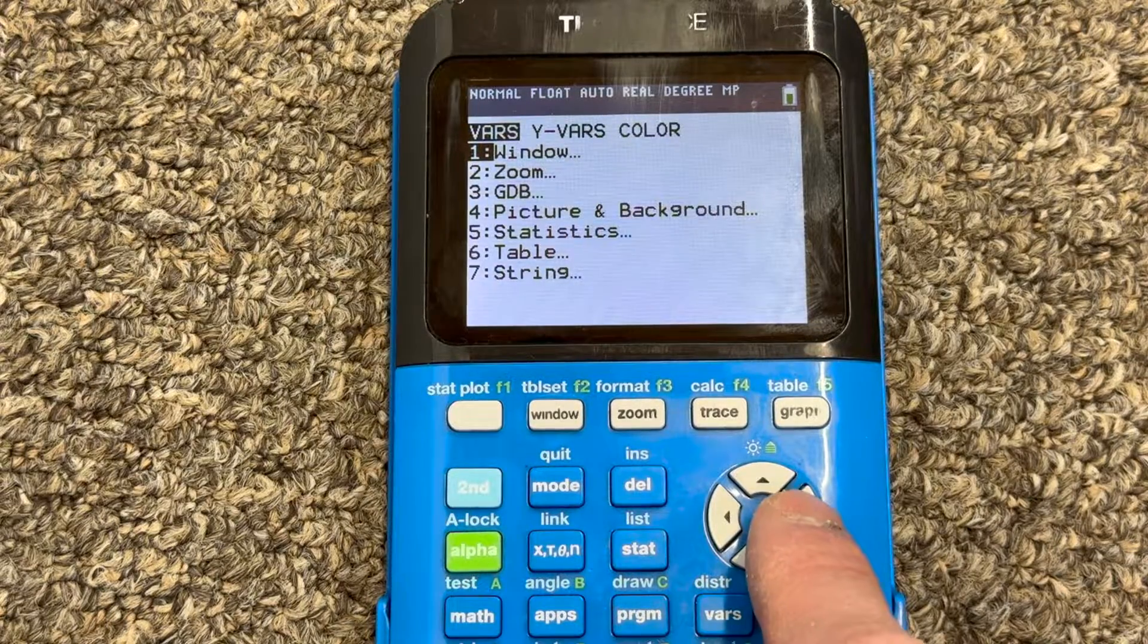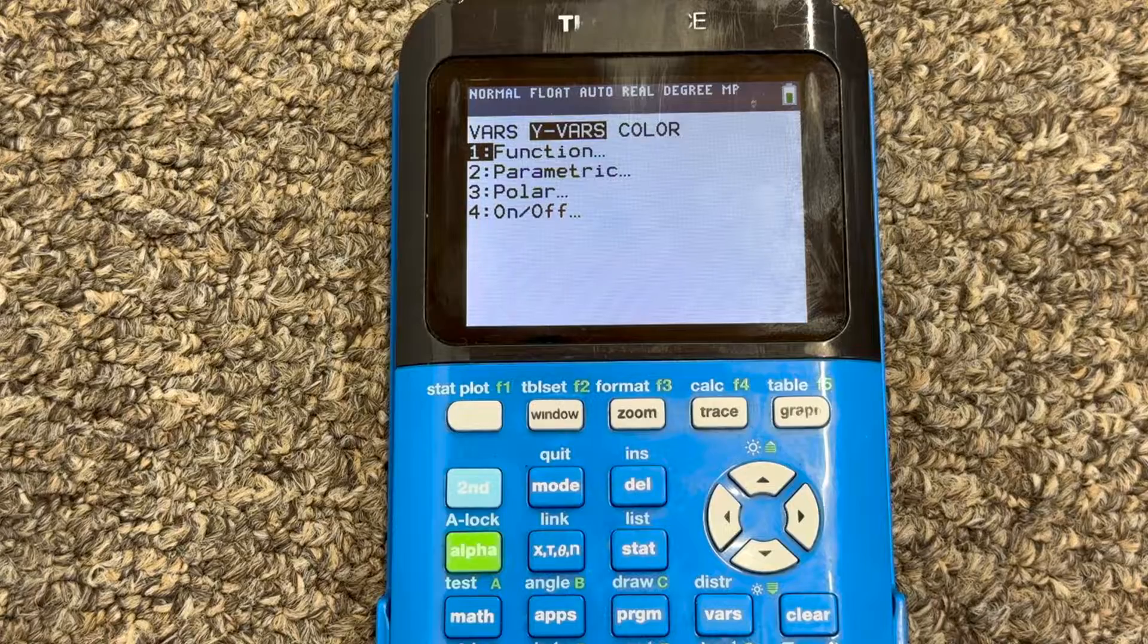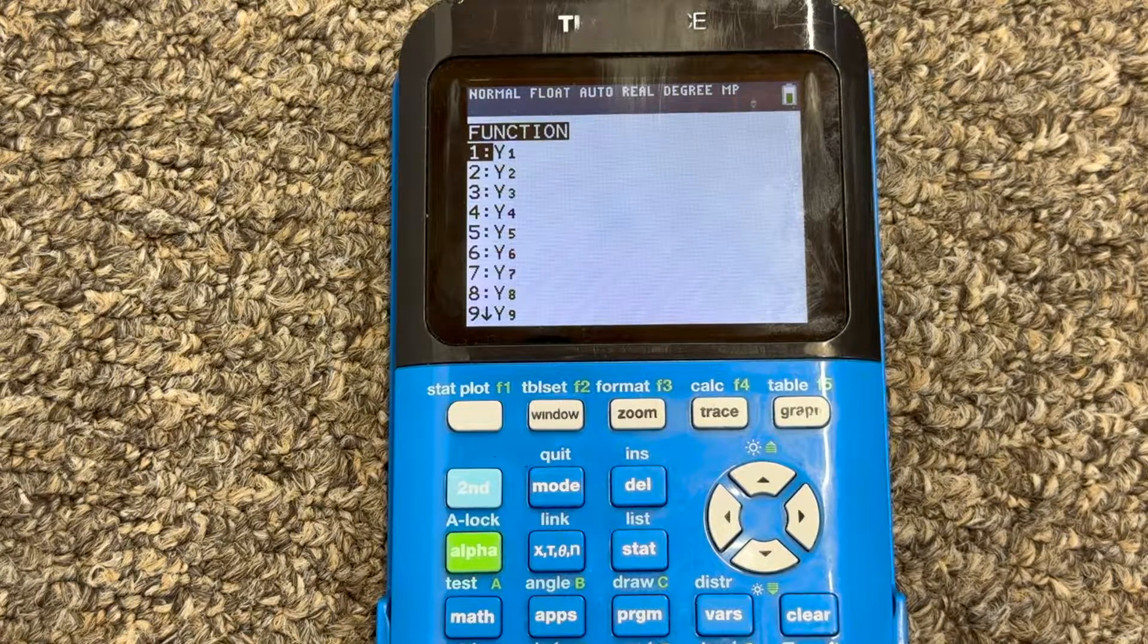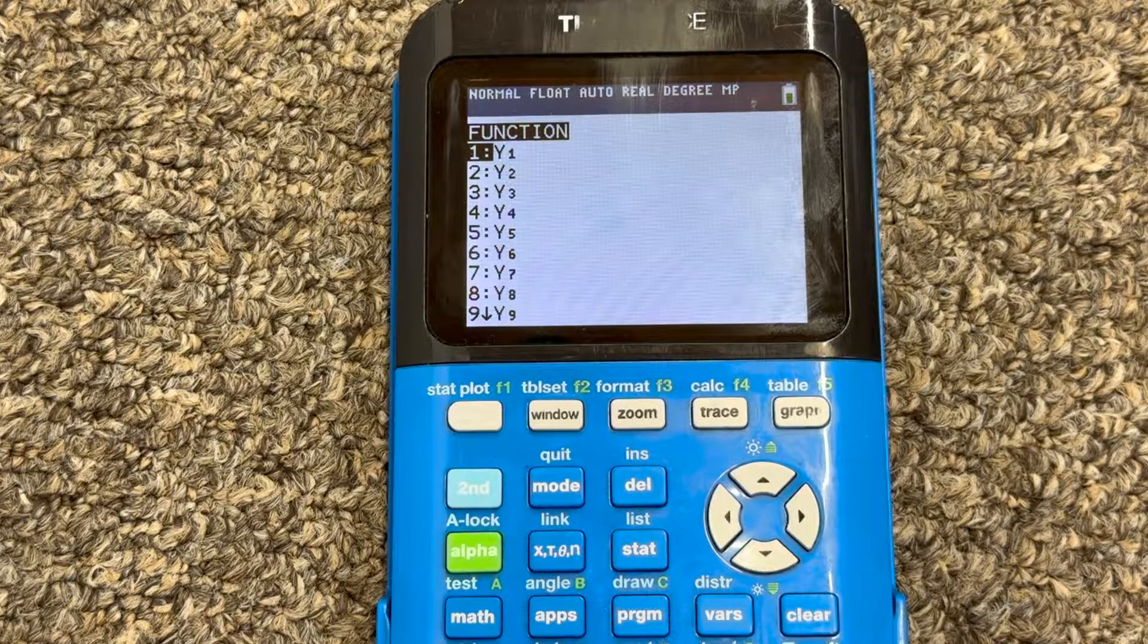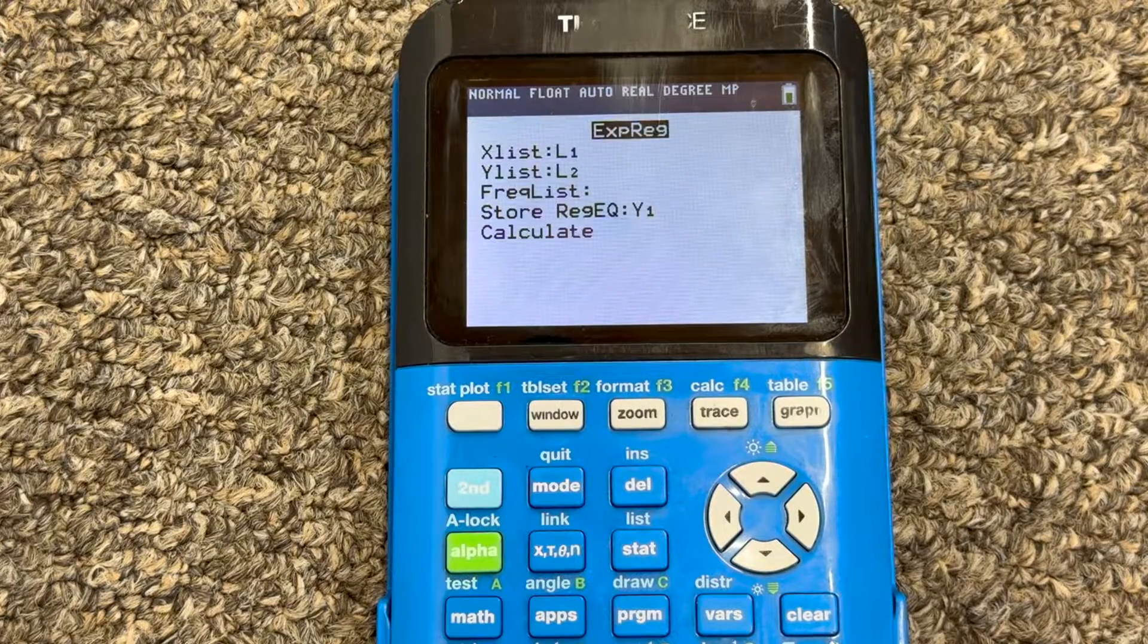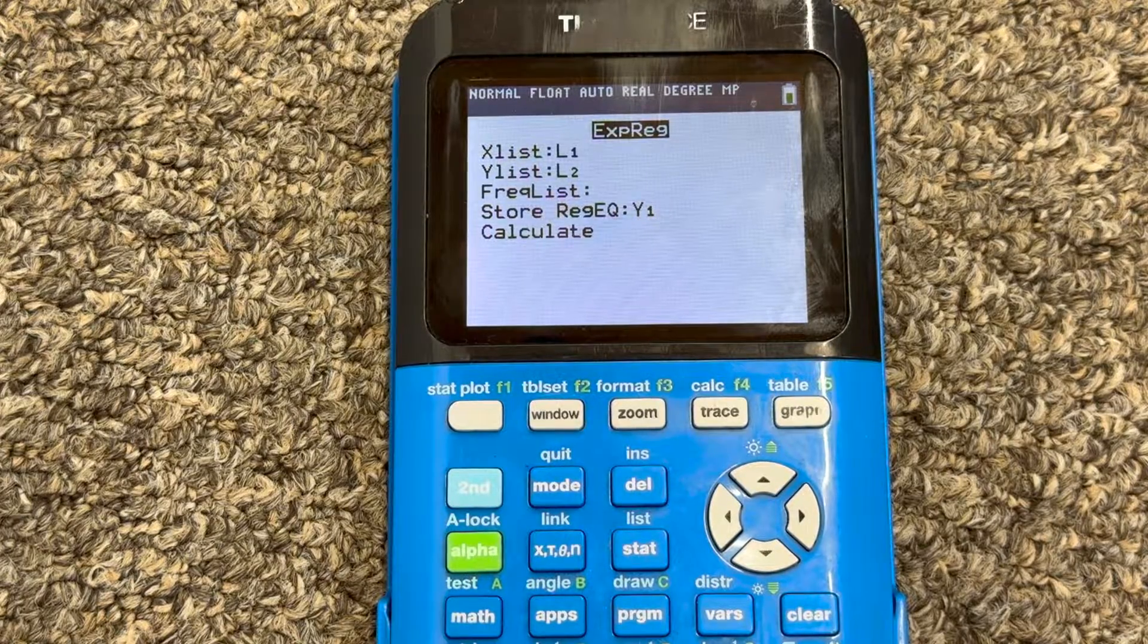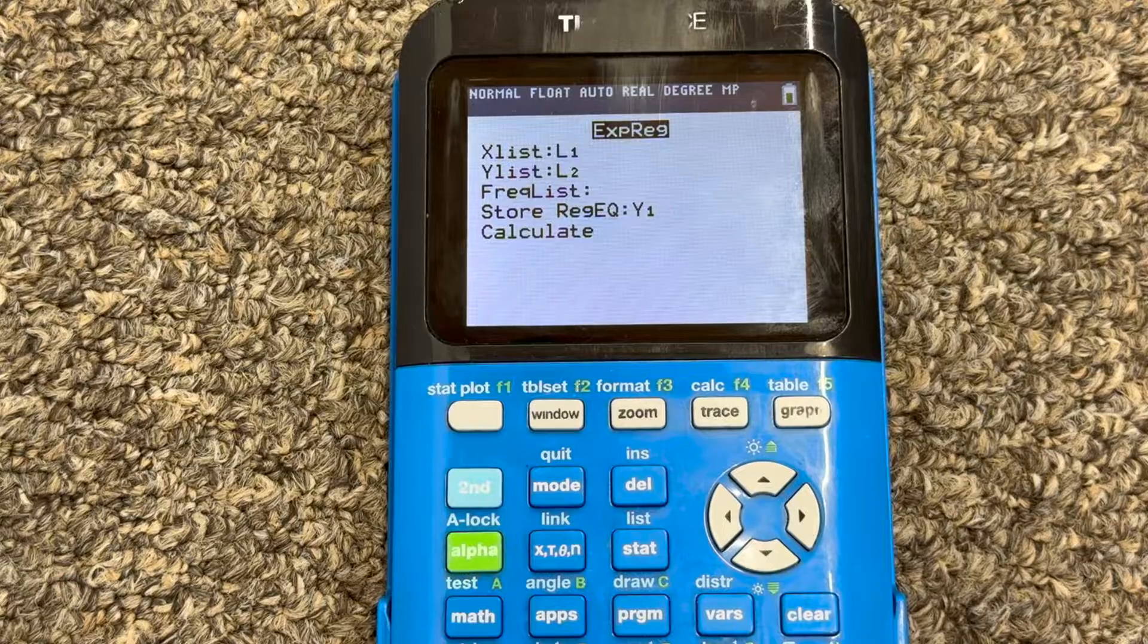Press that and then arrow to the right where it says y vars, and then number one is function. I'm going to press enter and I'm going to press enter again for y one. And that's going to save it under y equation one, and I'll show you where that's at in just a moment.